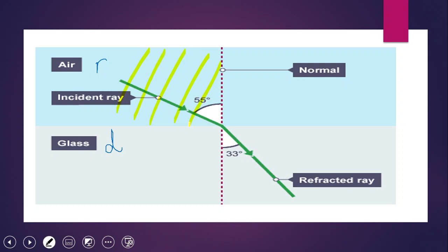We draw a wave ray that is incident on the material boundary. The ray hits the material boundary at one specific point. The first thing you do is draw a normal there — the normal is the perpendicular imaginary line that is perpendicular to the point where the ray hits the boundary surface. After that, you measure the angle of incidence, which is the angle from the normal to the incident ray.